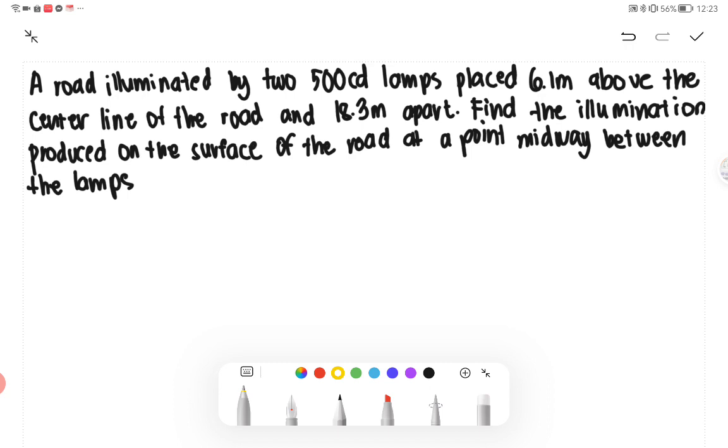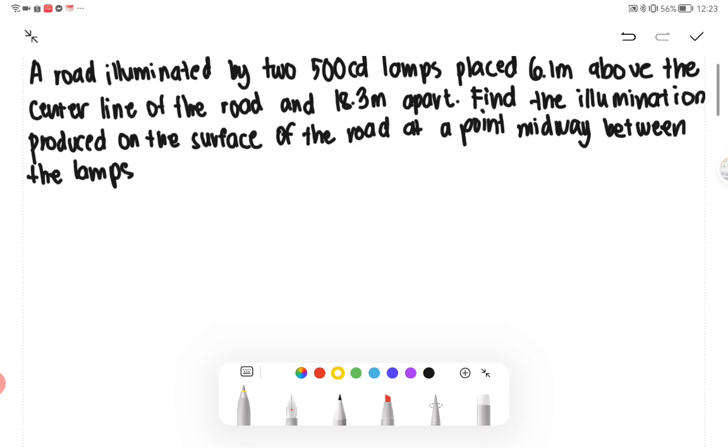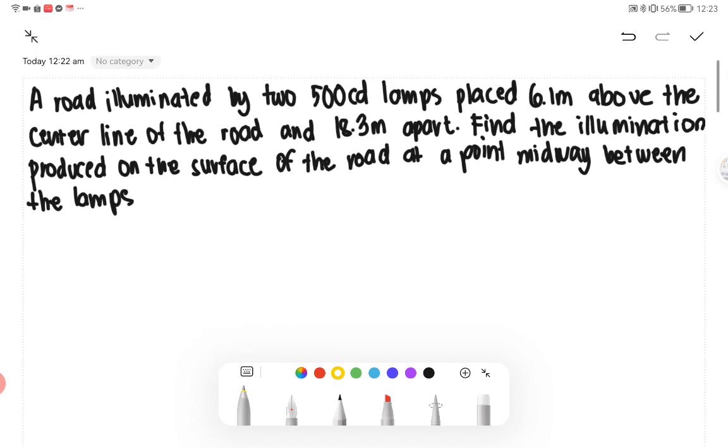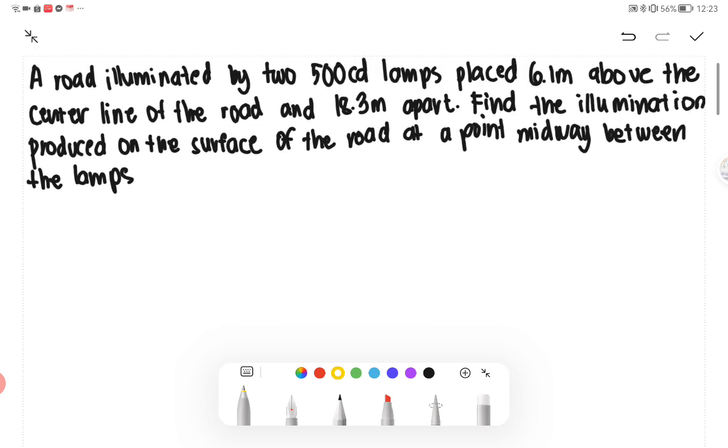First things first, we have to draw. It says here that there are two lights, and then it is 6.1 from bottom all the way to our lamp. Let's draw for better understanding. We have two lamps. Let's say this is our lamp number 1, and then this one is our lamp number 2.